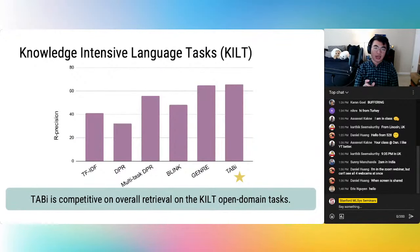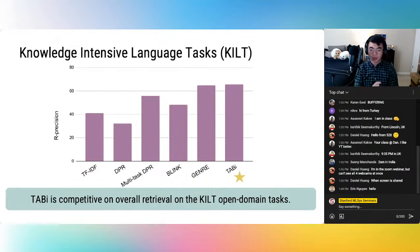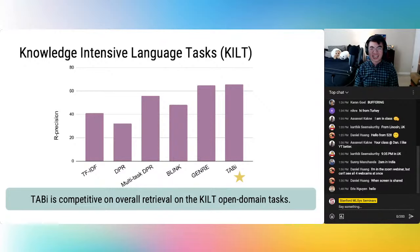On the KILT benchmark, which largely contains popular entities, Tabby's tail retrieval focus doesn't hurt its average retrieval for popular entities. Tabby performs very similarly to GENRE, actually outperforming by one point. So even though we weren't intending to focus on popular entities, we still see a little bit of lift there.